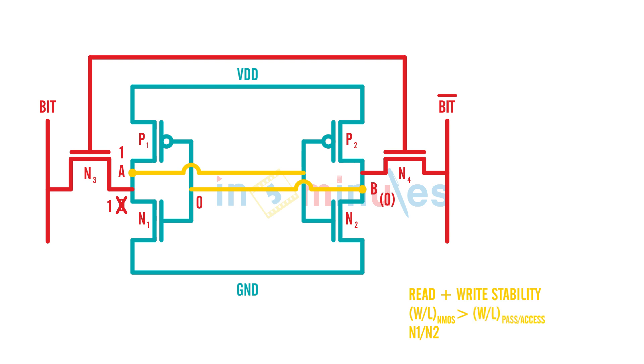Remember N3 and N4 are called pass or access transistors. In this case, W/L of NMOS for read we saw N1 or N2 should be greater than W/L of N3 or N4.